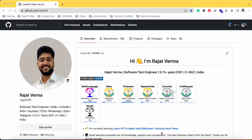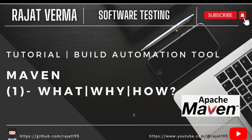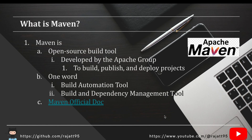Welcome to the first session for the series: tutorials on build automation tool Maven. Today we are going to see what Maven is, why use Maven, and how we can use Maven in test automation. Maven is an open source build tool. Open source means it's software developed by a team that you can use without paying anything. Maven is basically developed by the Apache group, which is the company whose team worked on its development.